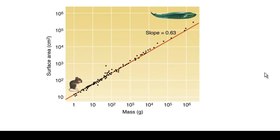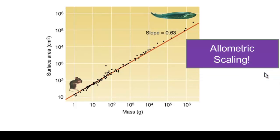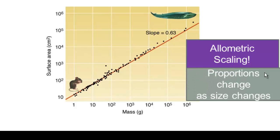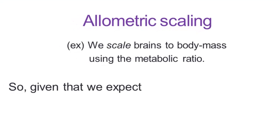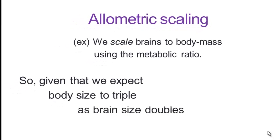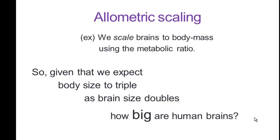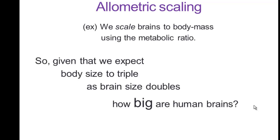So one thing we could do to scale differently, this is called allometric scaling, and this is where proportions change as size changes. We could use metabolism to define our expectations. And so if we do allometric scaling and we scale brains to body mass using the metabolic ratio, which is somewhere between two-thirds and three-quarters depending on who you read, given this, we can expect body size to triple as brain size doubles. And then we can say, well, how big are human brains? What's our EQ given allometric scaling based on metabolism?